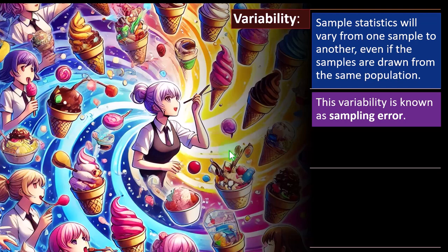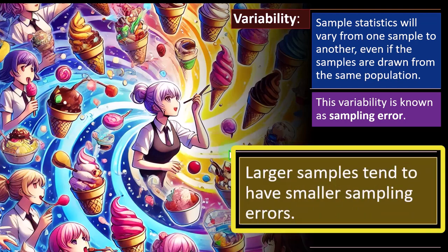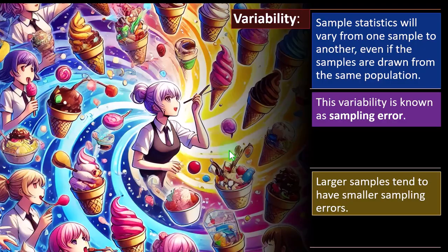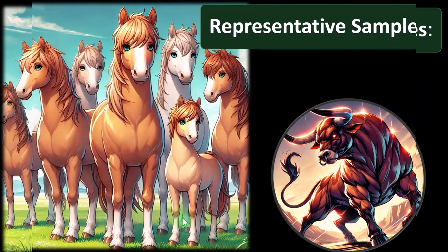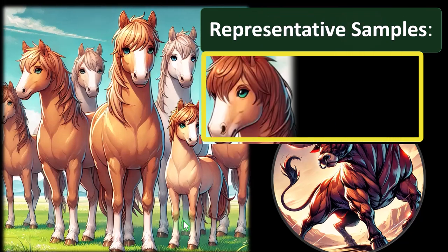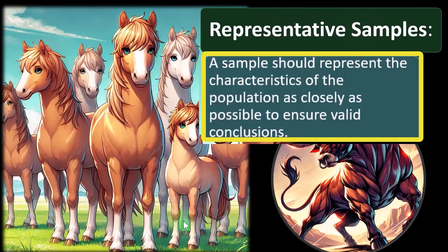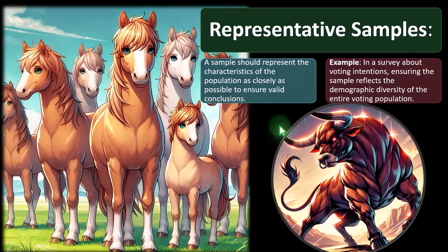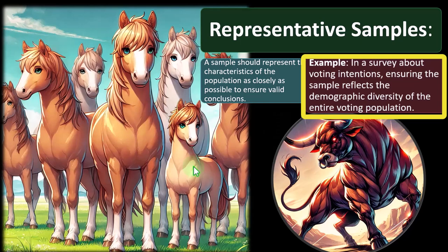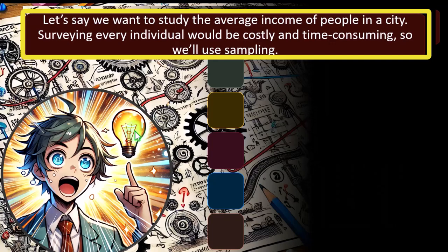Representative samples: a sample should represent the characteristics of the population as closely as possible to ensure a valid conclusion. If you're sampling horses and get a bull in the sample, it might affect your conclusions. Example: a survey about voting intentions should ensure the sample reflects the demographic diversity of the entire voting population.